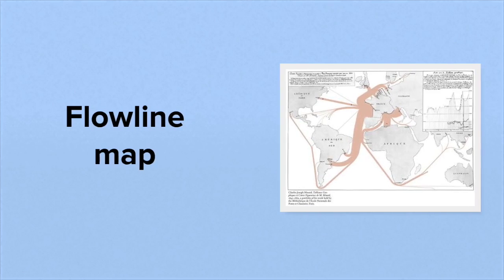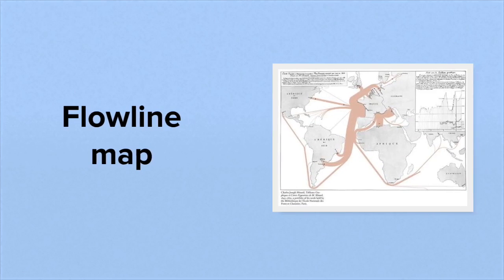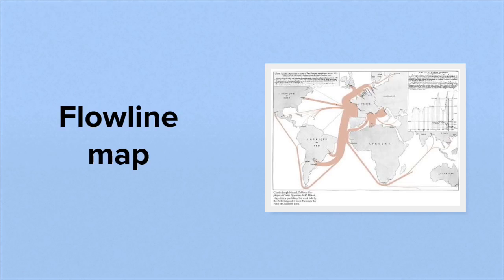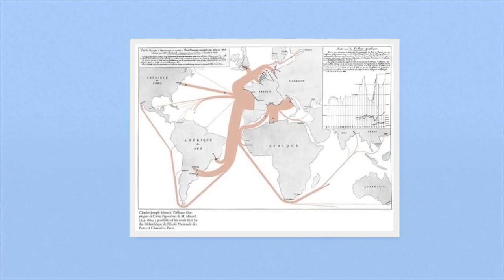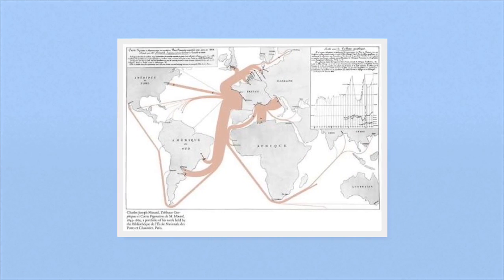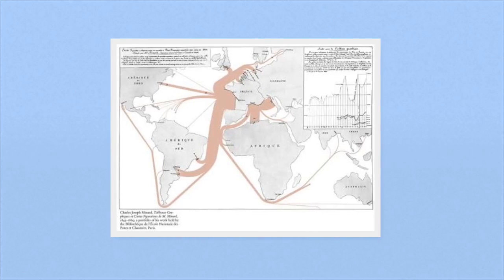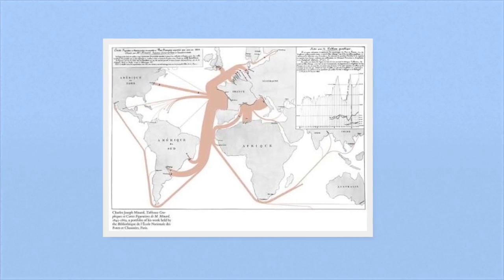The example of this is a very cool map by Mignard looking at the flow of French wine. This is from 1864 and it shows us where the majority of wine went flowing from France to the rest of the world.